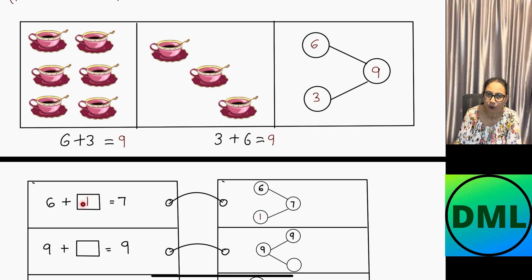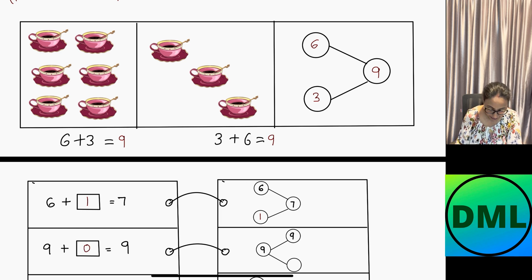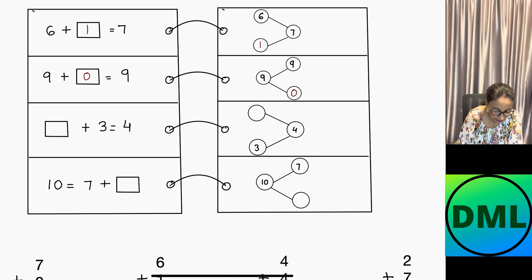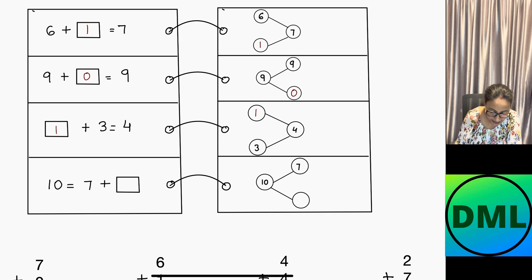Let's see the next example: 9 plus blank equals 9. From 9 I have to get 9, so I don't have to add any number — that will be 0. So 9 plus 0 equals 9. Next example: blank plus 3 equals 4. You can do 4 minus 3 equals 1, or 1 plus 3 equals 4. So I write down 1, because 1 plus 3 equals 4.